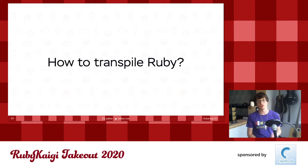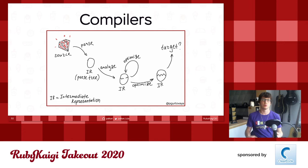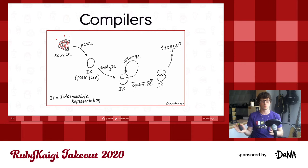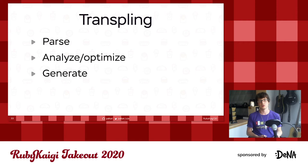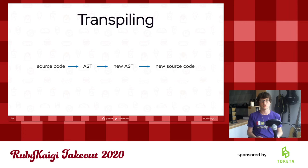Remember, I said in the very beginning that a transpiler is a source-to-source compiler. Generally, compilers work as follows: first, we parse the source code into some intermediate representation — usually an abstract syntax tree. Then we do some analysis and optimizations, and finally generate target code. In the case of a transpiler, we parse source code, we analyze and optimize, and we generate new source code. We do this by modifying the abstract syntax tree and generating new source code from it.